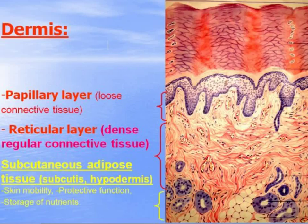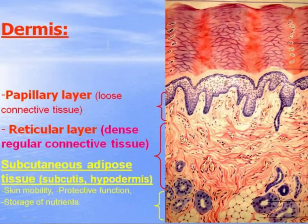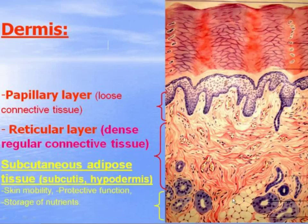Dermis consists of two layers. The papillary layer consists of dermal papillae made of loose connective tissue. They contain many blood capillaries which supply nutrients and oxygen to the epidermis. The more pronounced papillae belong to the dermis reticular layer, which is dense irregular connective tissue with elastic and collagen fibers running in all three directions — this is the strongest layer of skin. Subcutaneous adipose tissue, or hypodermis, contains adipose tissue providing skin mobility, protective function, and storage of nutrients.